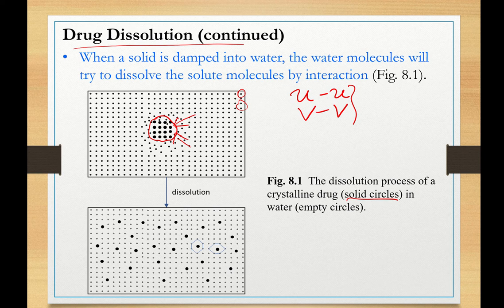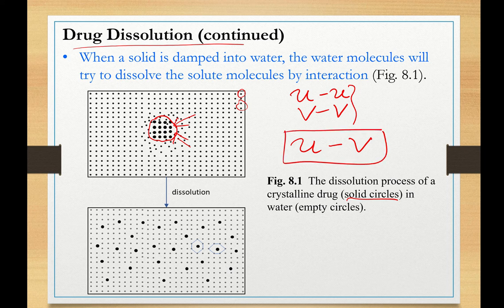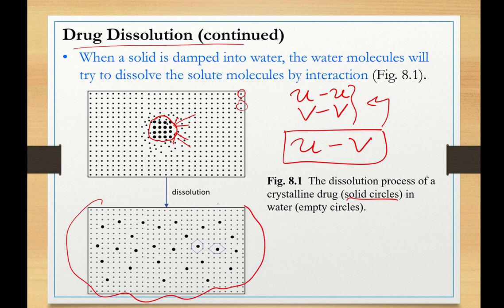At the same time, we have the simultaneous creation of solute-solvent bonds. These bonds release energy and the energy released is used again to break more bonds of solute-solute and solvent-solvent and so on and so forth. At the end, when all solutes dissolve in a solvent, we have a homogeneous distribution of the solute molecules in a solvent at maximum distance from each other. This is a homogeneous solution here.